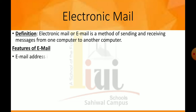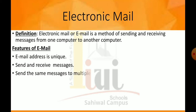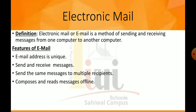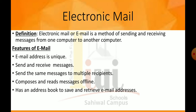اسی page پہ features of email بھی given ہیں — مطلب کہ email دوسروں سے کس طرح different ہے۔ First: email address is unique — آپ کا email address صرف آپ کا ہوتا ہے، کسی دوسرے کا نہیں ہو سکتا۔ Sending and receiving messages — یہ messages بھیجتا اور receive کرتا ہے۔ Send the same message to multiple recipients — ایک message بہت سارے لوگوں کو send ہو سکتا ہے۔ Composes and reads messages offline — جب آپ offline ہوتے ہیں تب بھی messages read کر سکتے ہیں۔ Has an address book to save and retrieve email addresses — آپ کے پاس address book ہوتی ہے جس میں email addresses save اور retrieve کر سکتے ہیں۔